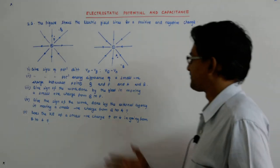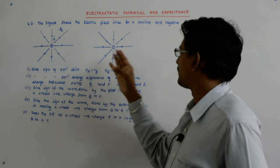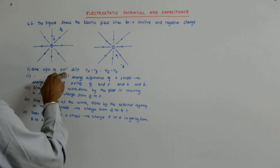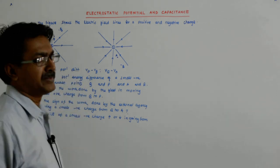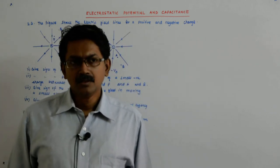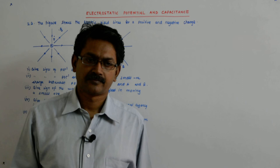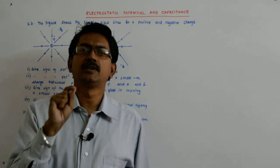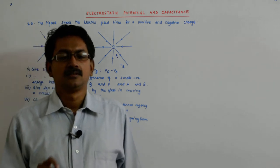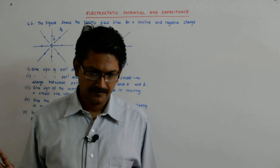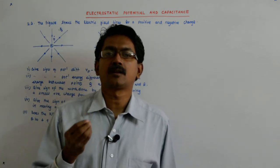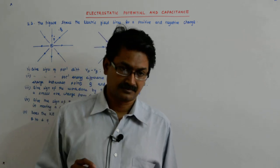Let us try to solve this question. There is a positive and a negative source charge, and they have asked some questions based on that. The first is: give the signs of potential difference VP minus VQ and VB minus VA. When you say potential, you are moving a unit positive charge. When you say potential energy, you are moving any charge. When someone is asking you to find out the potential difference, you are moving a unit positive charge — never forget that.